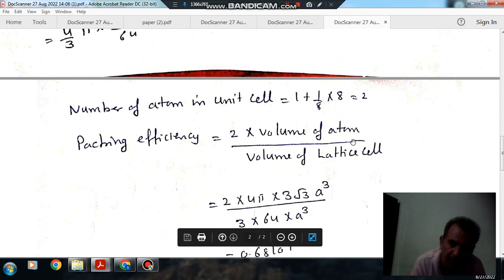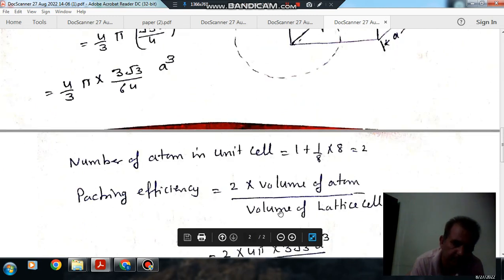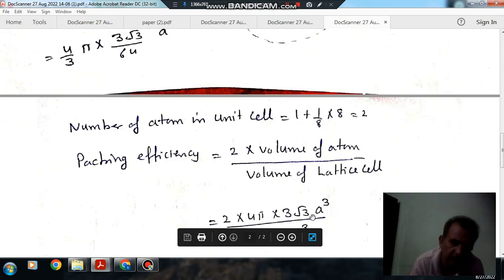is the volume occupied by all the atoms divided by the volume of unit cell. Volume occupied by single atom is this and two atoms is multiple of two and volume of unit cell is this.